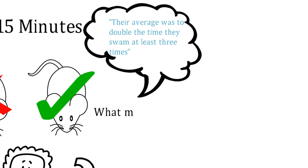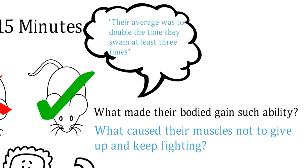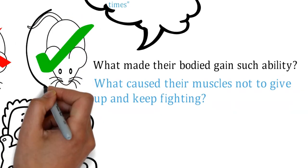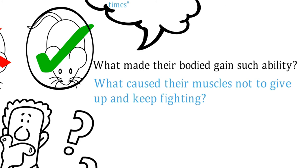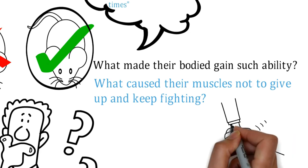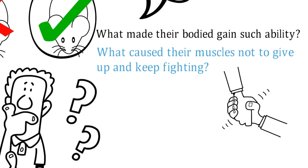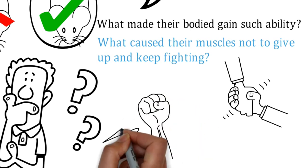What made their bodies gain such ability? What caused their muscles not to give up and keep fighting? The answer is that these mice simply realized that the situation was not hopeless. So they managed to fight for their lives. They waited for someone to save them, just like last time. They saw hope at the end of the tunnel and that gave them power. The possibility that someone would come and save them gave them insane strength to keep swimming.